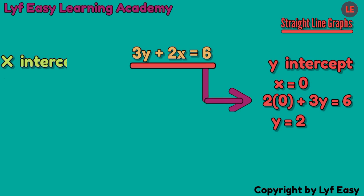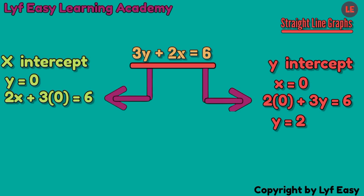Same applies on finding x-intercept, wherever there is y on this equation, we put 0. By doing so, we get x equals 3.